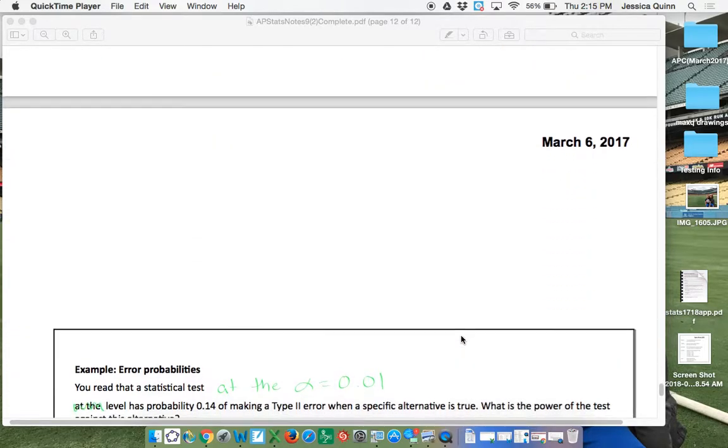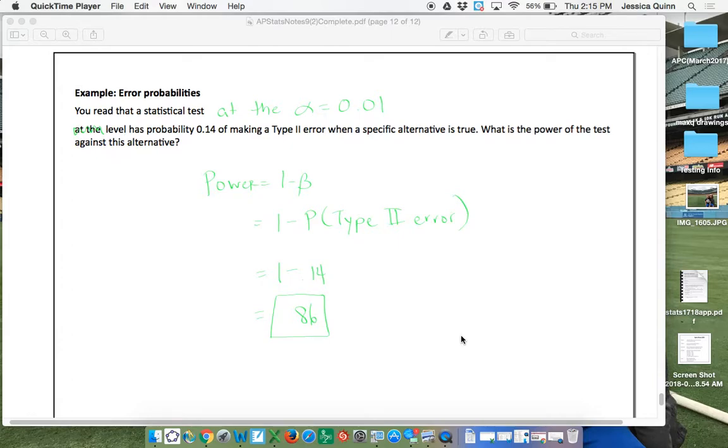And so the last little example here says, you read that a statistical test at alpha equals 0.01 has a probability of 0.14 of making a type 2 error. So this right here, this is your beta. When the specific alternative is true, what's the power of the test against this alternative? So the power is 1 minus beta. So it's 1 minus the probability of a type 2 error.